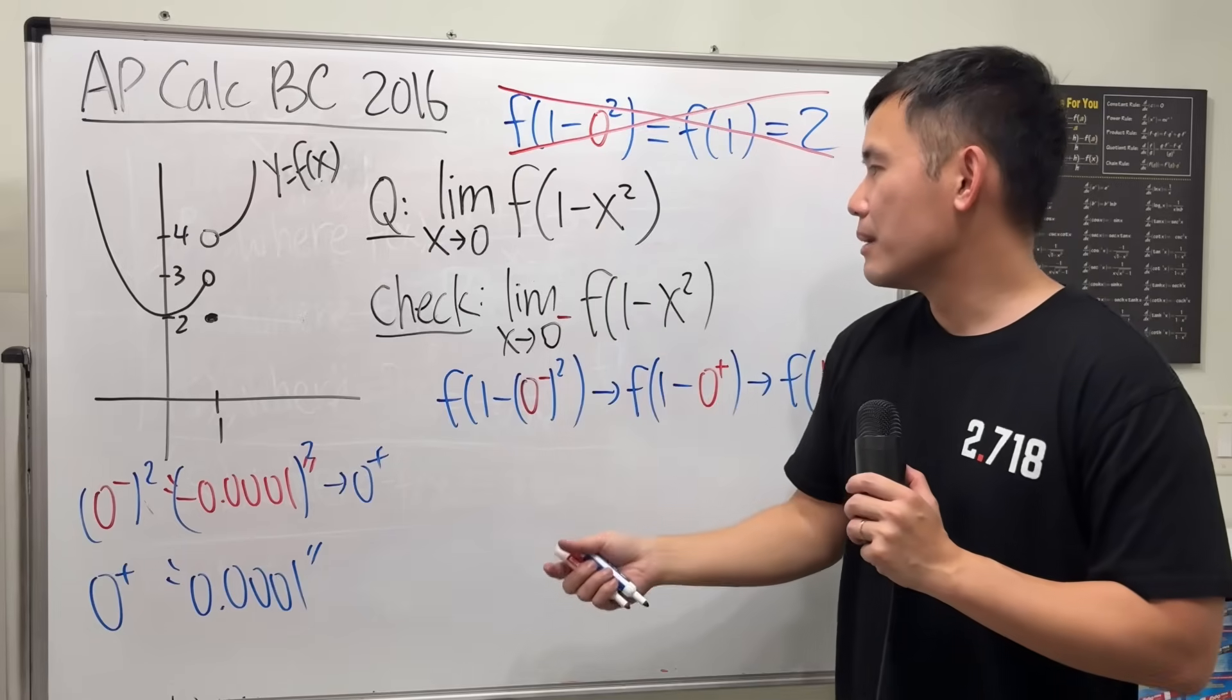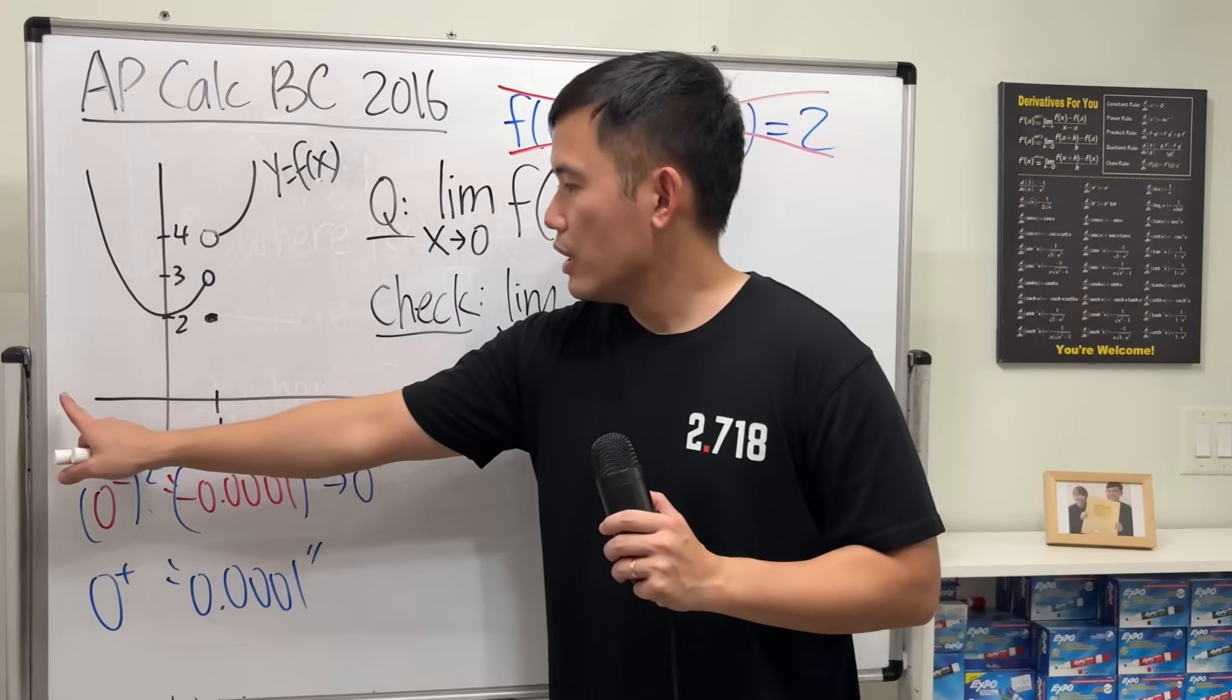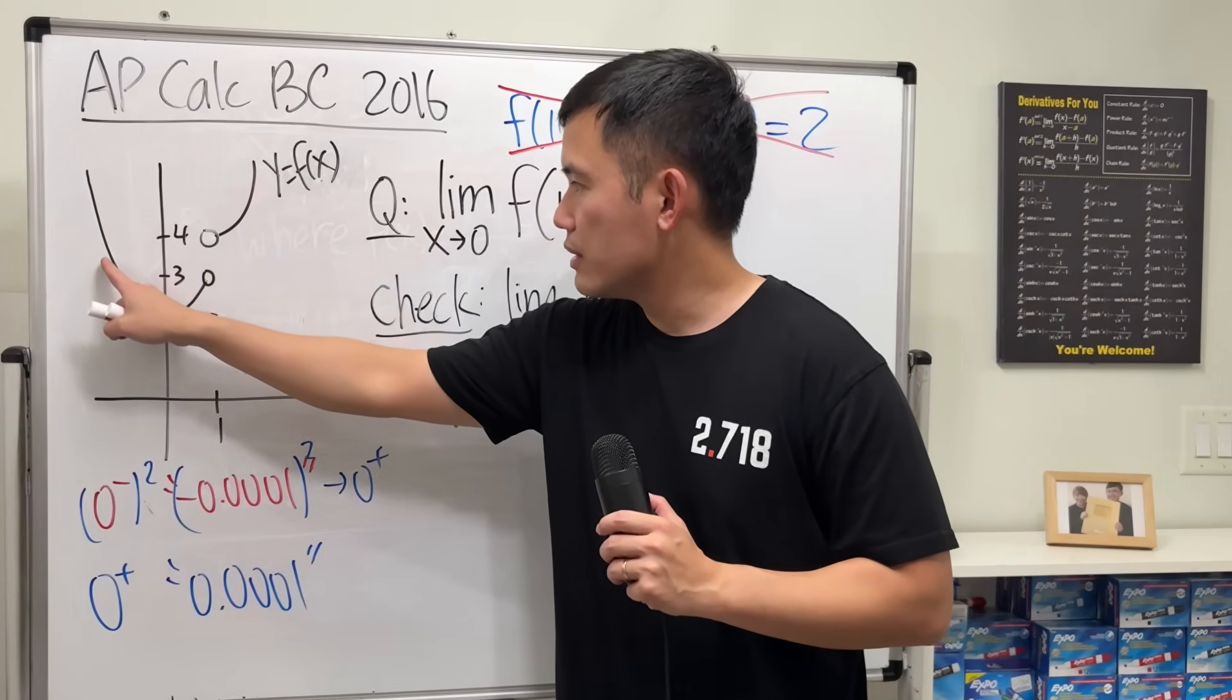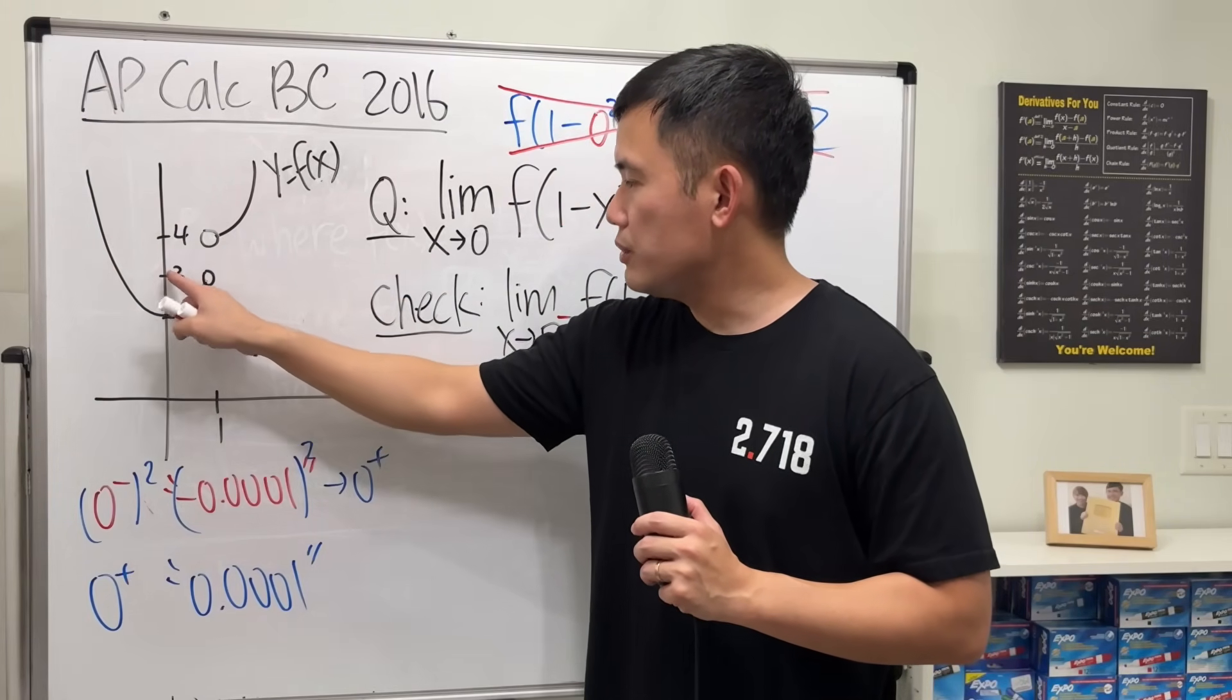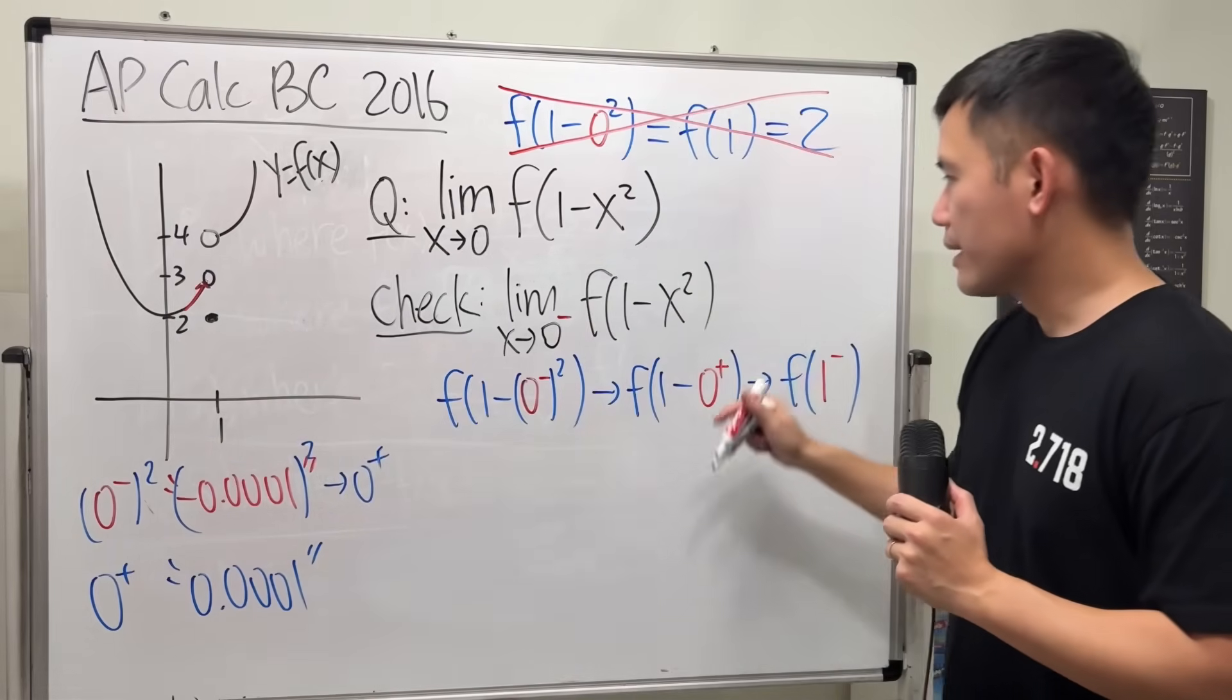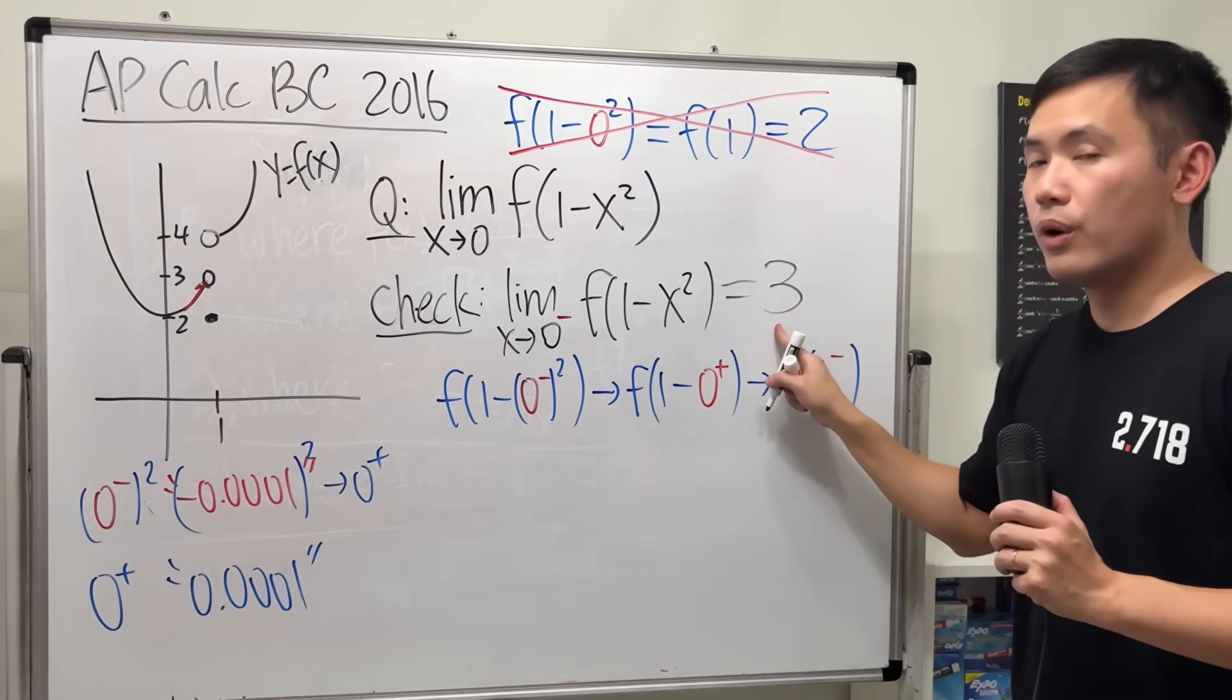but I'm really looking at f(1⁻). If we approach 1 from the left-hand side, you can see the graph is approaching 3. So, it's like this. The y value is approaching 3. So, the answer for this part is equal to 3.